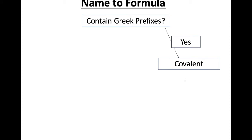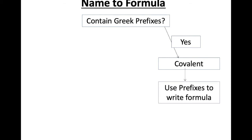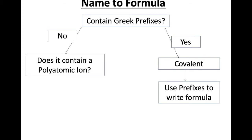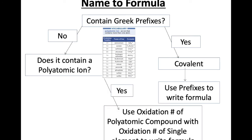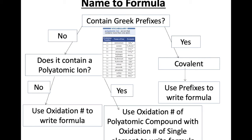That concludes how to go from a formula to a name. Next, we're going to flip that around — what if I give you a name and want you to write the formula? This gives us a different flowchart. Does it contain any Greek prefixes? If yes, it's covalent and you use the prefixes to write out the formula. If it doesn't contain Greek prefixes, you know it's ionic. Then ask: does it contain a polyatomic ion from the chart? If yes, look at the oxidation number of the polyatomic compound and the single element to write the formula. If no polyatomic ion, use the oxidation numbers to write the formula.